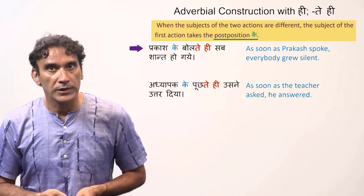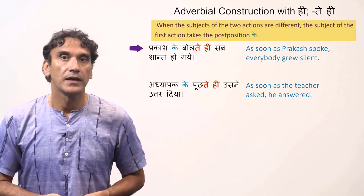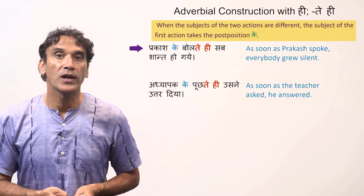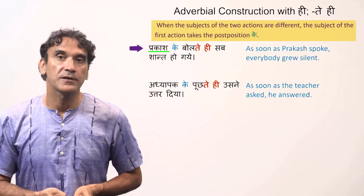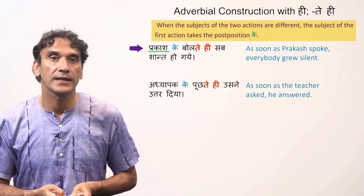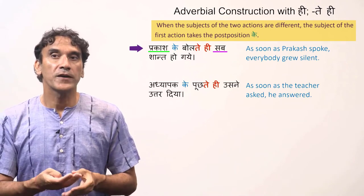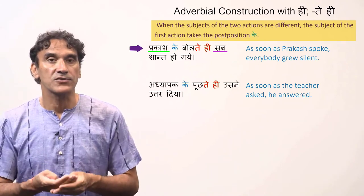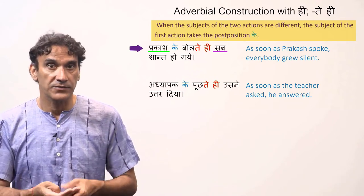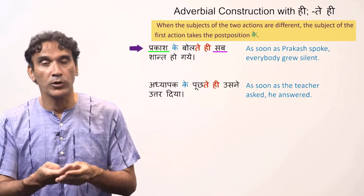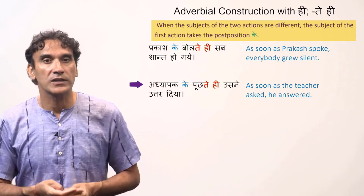In the case of two different subjects, the subject of the first action takes the postposition 'ke'. For example: 'Prakash ke boltehi sab shant ho gaye' — as soon as Prakash spoke, everybody grew silent. Here you have two subjects: for 'bolna' (to speak) the subject is Prakash, and for the second verb 'shant hona' (to grow silent) the subject is 'sab' — everyone. Whenever you have two different subjects, the first subject takes the postposition 'ke', as in 'Prakash ke boltehi'.